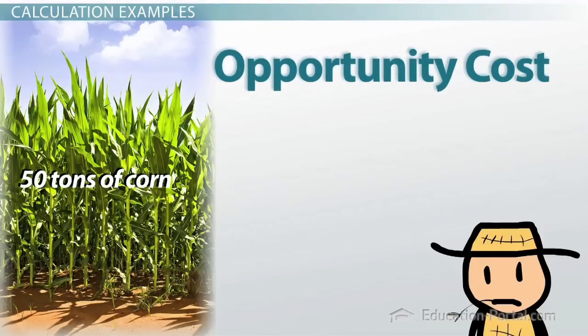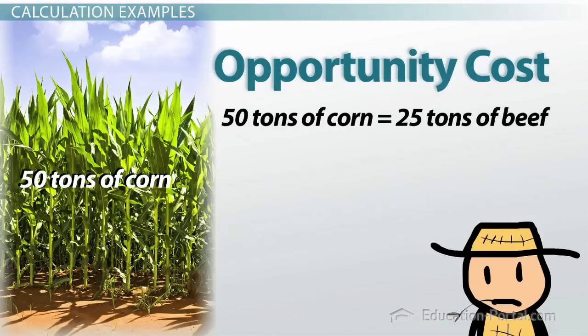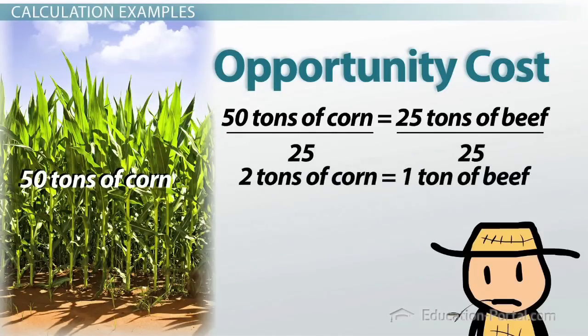Therefore, the opportunity cost is found by solving this equation. 50 tons of corn equals 25 tons of beef. What we really want to know is how much beef we could have produced if we chose to produce one ton of corn, but the question gave us 50 tons. To reduce this equation down, we divide each side by 25, and this gives us 2 tons of corn equals 1 ton of beef.